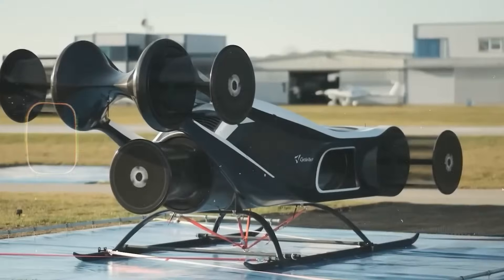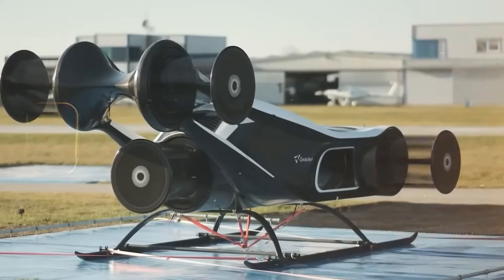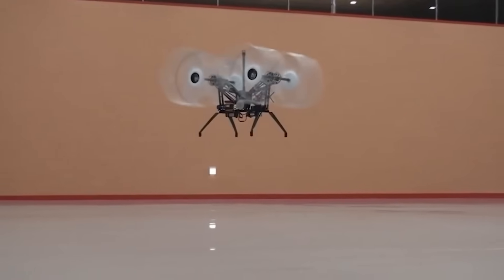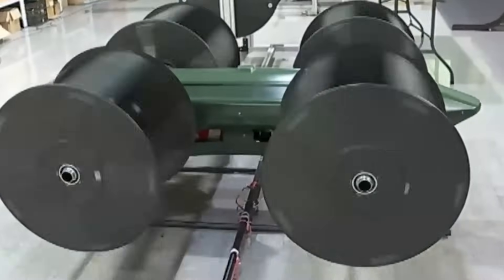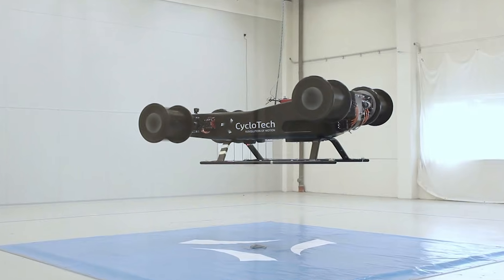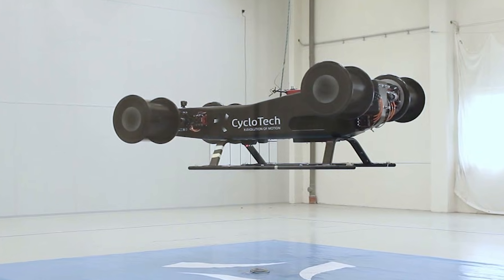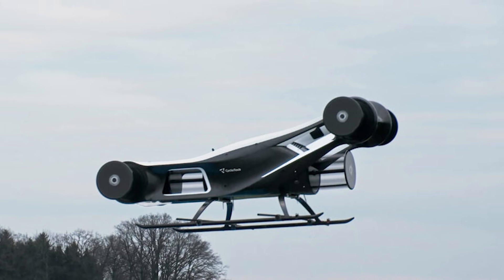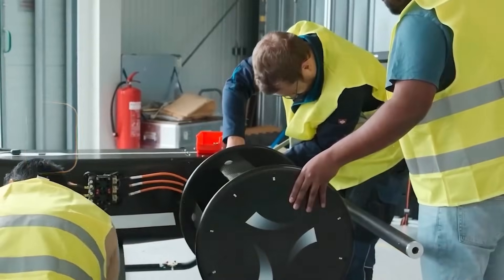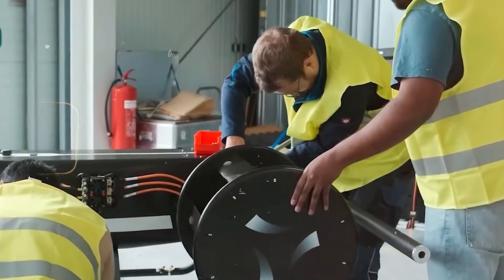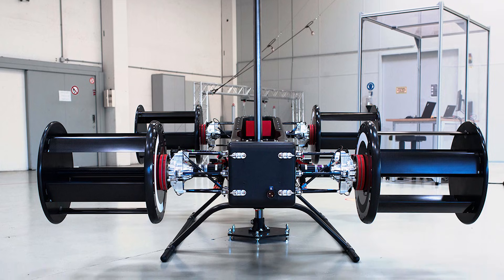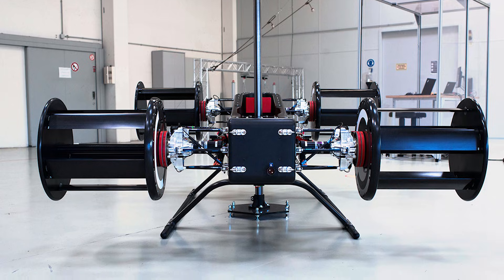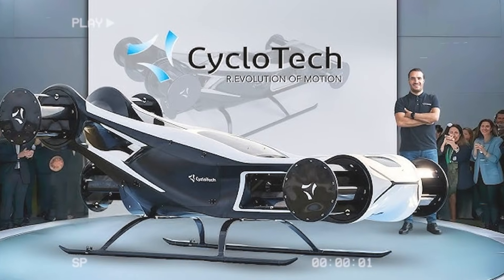However, the challenges are substantial. Cyclorotors require complex control systems, precise timing, and robust structures capable of withstanding enormous centrifugal forces. As rotation speed increases, the rotor constantly tries to pull itself apart. The systems are also physically larger and heavier than traditional propellers, which can limit their usefulness in weight-sensitive aircraft. Despite these challenges, the dream refused to die. Engineers continued refining the concept, waiting for materials, motors, and control electronics to catch up with the idea. That moment may have arrived with CycloTech.